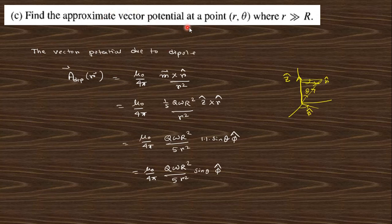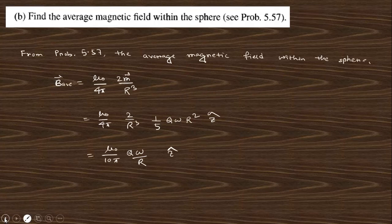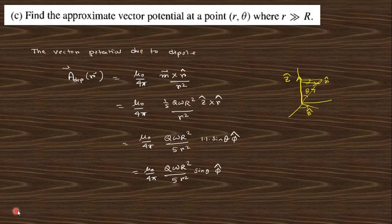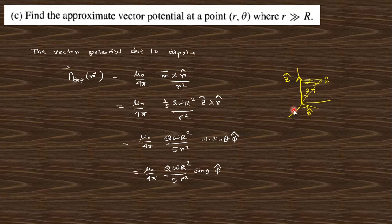Find the approximate vector potential at a point far from the sphere, for r much greater than R. The vector potential due to a dipole is given by that expression — it involves m cross r. The dipole moment m was already obtained. Substituting: z cross r gives r sin θ in the φ-hat direction, since z cross r is φ-hat (perpendicular to both z and r).